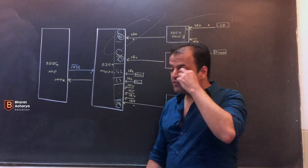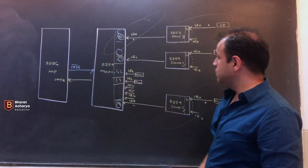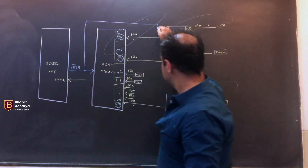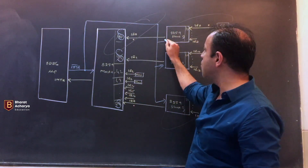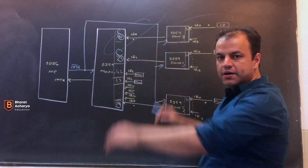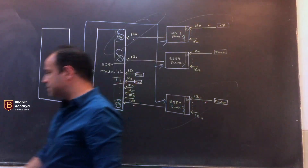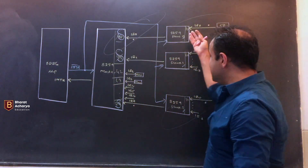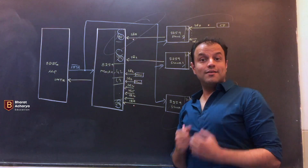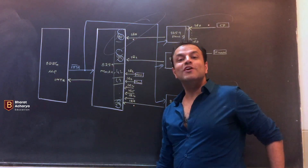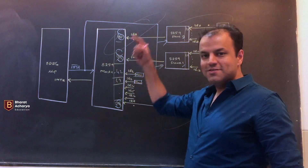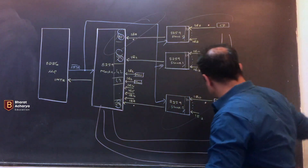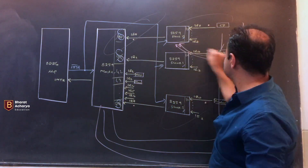Who will the CPU give this INTA bar to? It will go to the master as well as all the slaves. The first INTA bar will go to everybody in the circuit. Everybody has come to know that some interrupt will get serviced. Each one of them will think their interrupt will get serviced because they've all given their best interrupt. Who knows the correct interrupt to be serviced? The master. So this is when the master will inform the slaves using cascade lines.